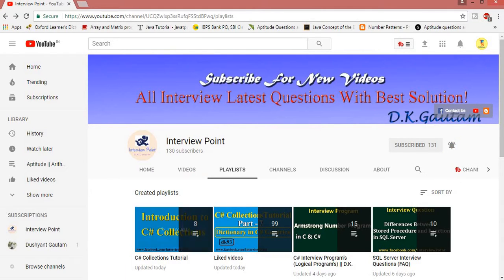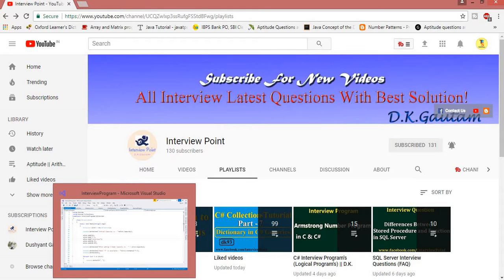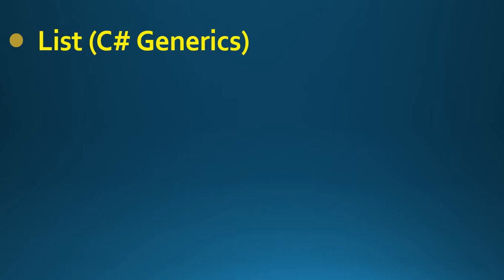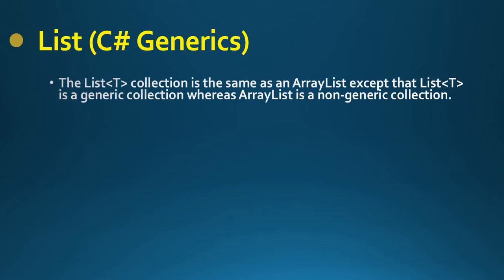As we know that in C# collections there is an ArrayList class. But in this session we will learn the List class, which is available in System.Collections.Generic namespace. The List class is similar to ArrayList, except that List<T> is a generic collection, whereas ArrayList is a non-generic collection.